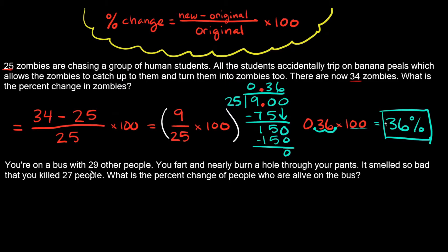This problem says you're on a bus with 29 other people. You fart and nearly burn a hole through your pants. It smelled so bad that you killed 27 people. What is the percent change of people who are alive on the bus? So originally, how many people were alive on the bus? It's you plus 29 other people, so there were originally 30 people alive. You farted and killed 27 of them, so now how many people are alive? That's 30 minus 27, which is 3. So now there are only 3 people alive on the bus.